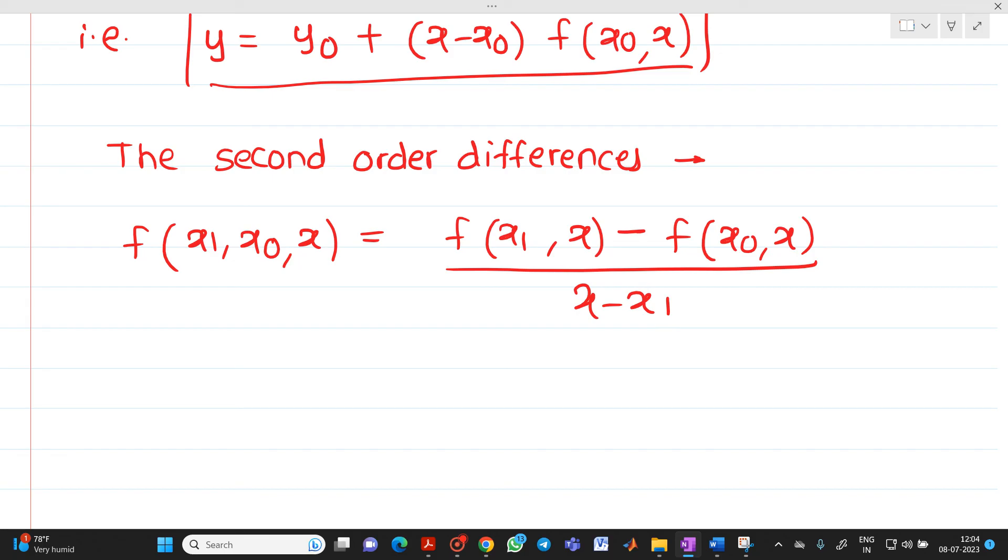Now, from this, putting these values, what we will get? So I can write it as y equal to y0. If we put this value in the above equation, then what we will get? y equal to y0 plus x minus x0 into f of x0 comma x1.